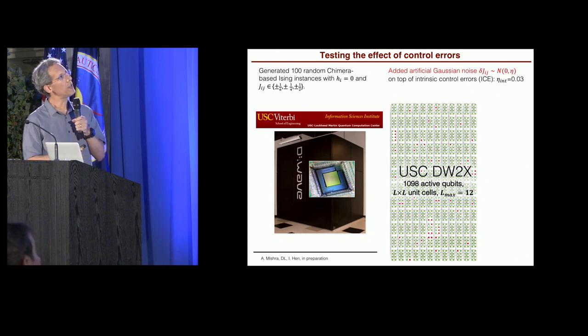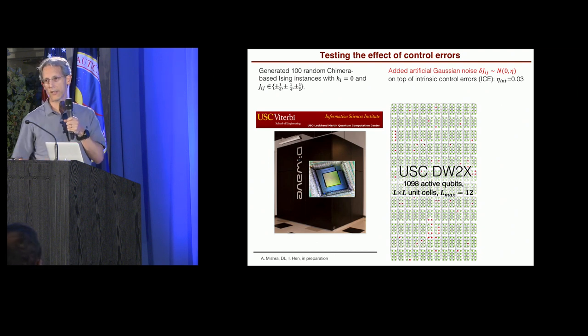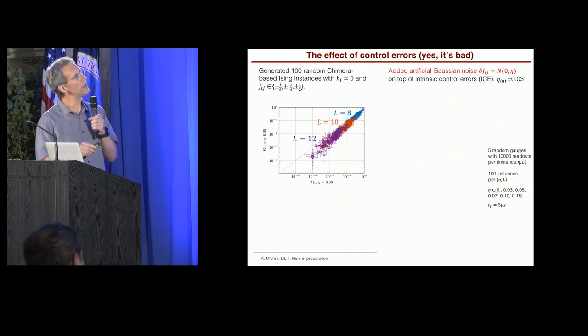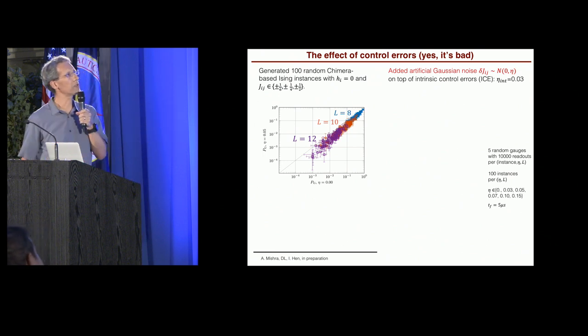All right, so what happens when you do this? So we're going to add Gaussian noise to this set. That's the experiment. And the Gaussian noise is parametrized by its standard deviation eta. So one way to look at that is to compare the ground state probability or the success probability without the added noise to with added noise. All right, so here it's just the intrinsic noise, which I remind you, again, 0.03. But this is adding no noise.